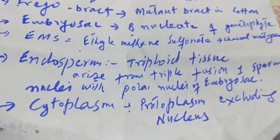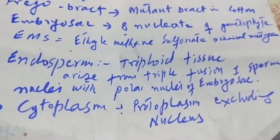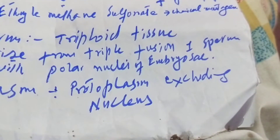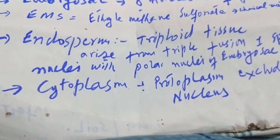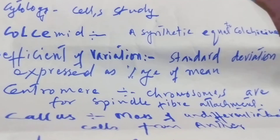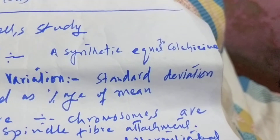Frego bract is the mutant bract in cotton. Embryo sac is an eight-nucleate female gametophyte. EMS (Ethyl Methane Sulfonate) is a chemical mutagen. Endosperm is the triploid tissue arising from triple fusion of sperm nuclei with polar nuclei of embryo sacs.